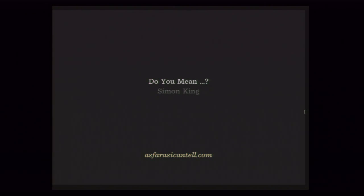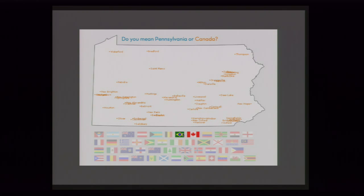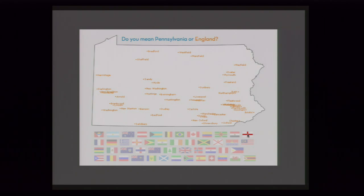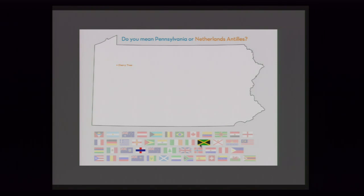This was a student project — Simon King, a Carnegie Mellon student — basically taking all of the names of cities in Pennsylvania and comparing them across different countries, looking at the intersection of city names here versus elsewhere. As you might expect, Canada and England share a great deal of names, but we can simply go through and see a number of these connections between different countries and how they are laid out.